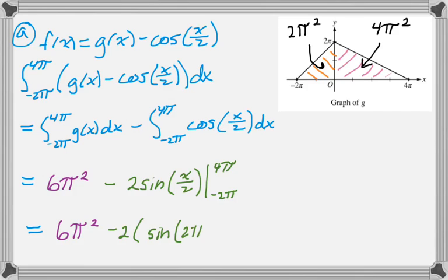Because when we plug in the bounds here, we end up with negative 2 and then the quantity sine of 4π over 2 is 2π, and then minus, and then the sine of negative π, because negative 2π over 2 is negative π. But both of those are 0. So we end up with just 6π squared. Alright, so that's part A.